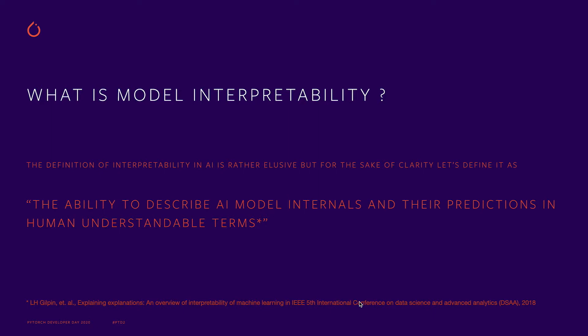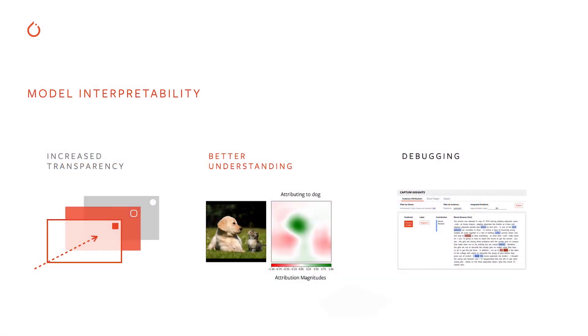The definition of model interpretability is rather elusive, but for the sake of clarity, let's define it as the ability to describe our model internals and their predictions in human understandable terms. Model interpretability is important because it helps us understand how our models reason. It helps us debug misclassified predictions and understand how we can change our models to improve model performance and prediction quality.